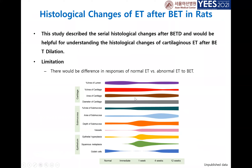We think this kind of histological change occurs in the cartilaginous eustachian tube. There is a limitation in that we used a normal eustachian tube, whereas balloon dilation is usually performed for abnormal eustachian tubes. However, we think there may be no major difference since there was no active inflammation in the abnormal ET — the responses should be similar.